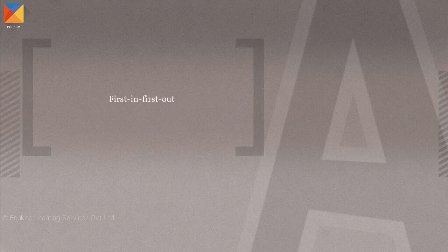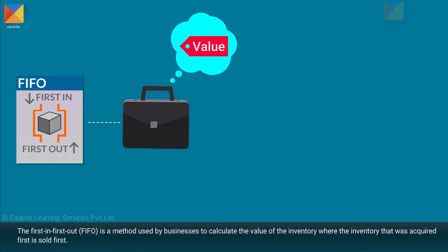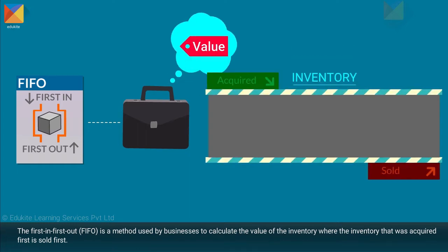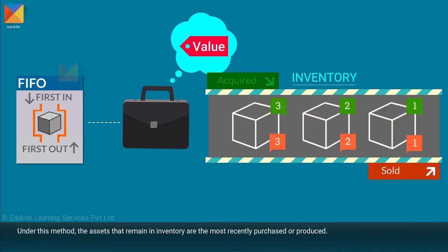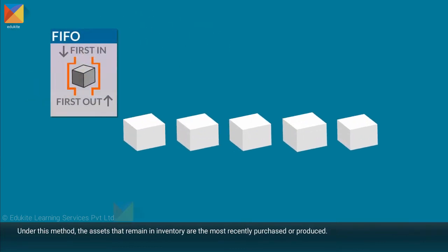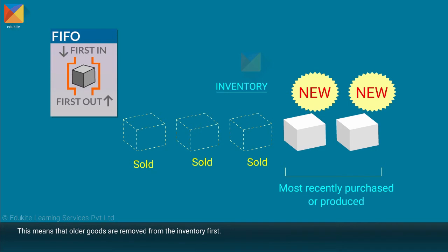First In First Out, that is FIFO, is a method used by businesses to calculate the value of the inventory where the inventory that was acquired first is sold first. Under this method, the assets that remain in inventory are the most recently purchased or produced. This means that older goods are removed from the inventory first.